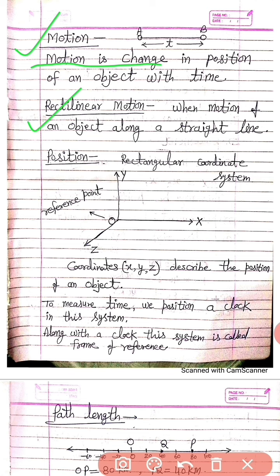We study in this lesson on rectilinear motion. What is rectilinear motion? When an object moves in a straight line — जब कोई object सीधी रेखा में गती करता है — तो उसे rectilinear motion कहा जाता है. और इस chapter में इसी की study करेंगे हम.